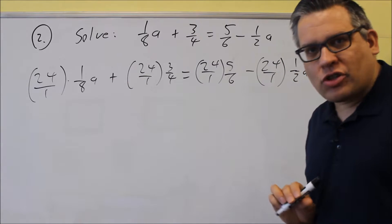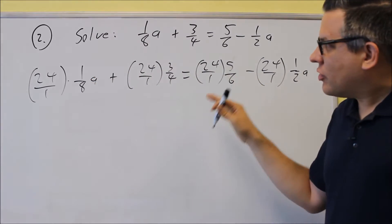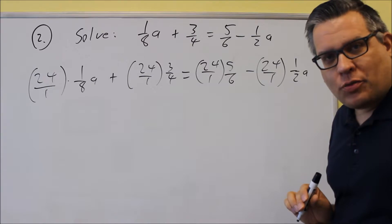Notice we're not doing reciprocals, we're not doing one over twenty-four, that's a different kind of problem. So we're not doing reciprocals in this, we're just multiplying by whatever the least common multiple is.